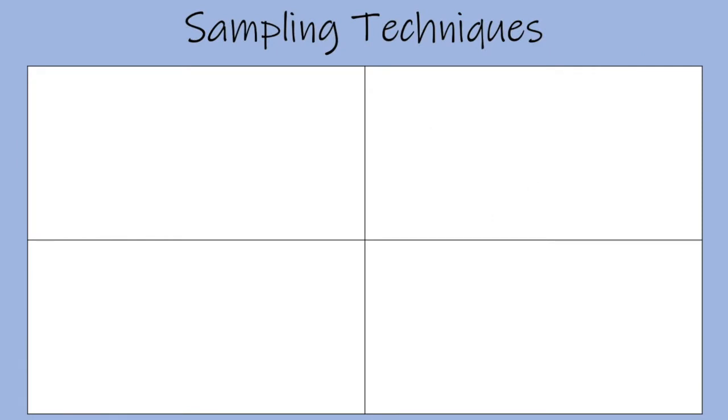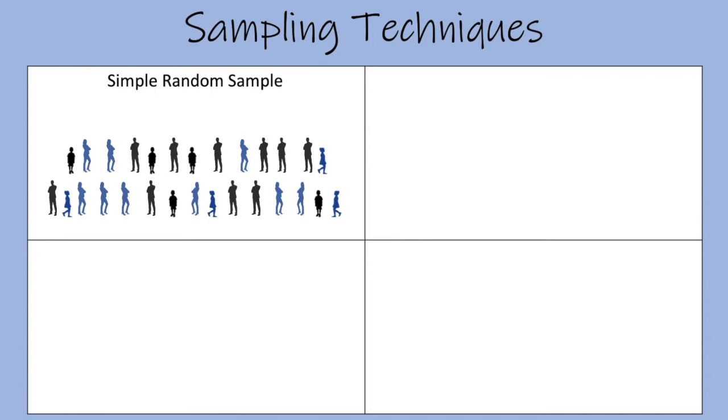I'd like to show you four of the main sampling techniques here. First up is the simple random sample. So let's say you have a group of people. In a simple random sample, every member has an equal chance of being selected.